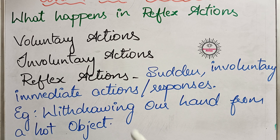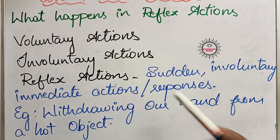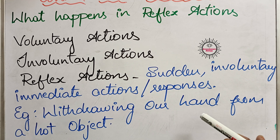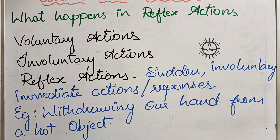One key example is withdrawing our hand from a hot object — immediately we withdraw our hand from it. That is an involuntary and immediate response. Another example: we close our eyelids when a bright light focuses on our eyes, to prevent damage to the retina. These responses take place within a fraction of seconds and are involuntary — all these are called reflex actions.